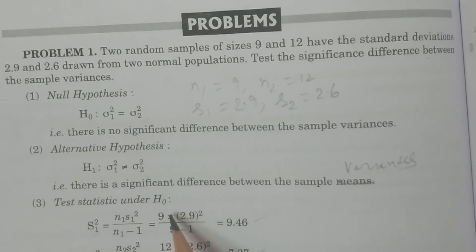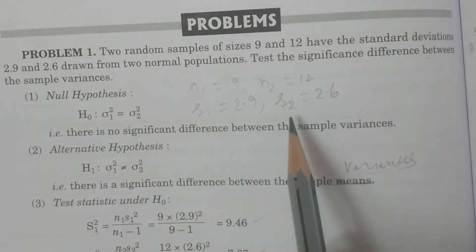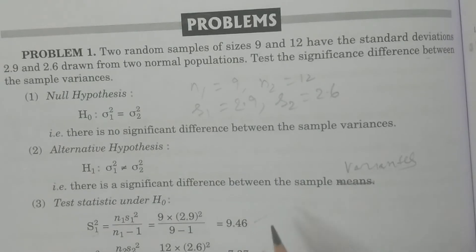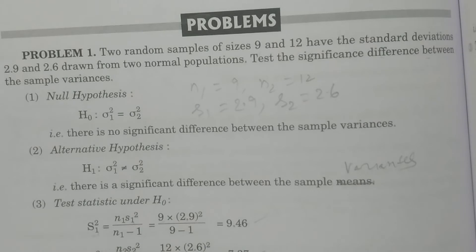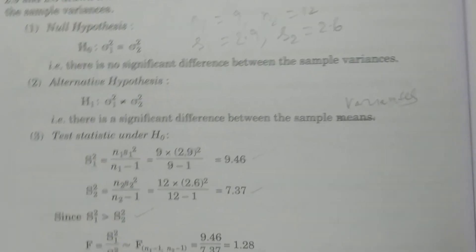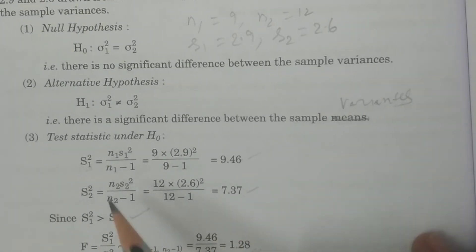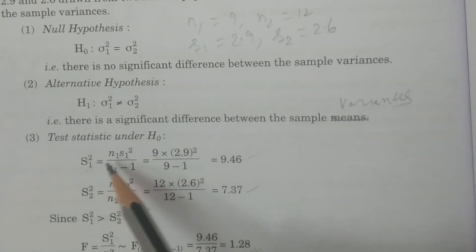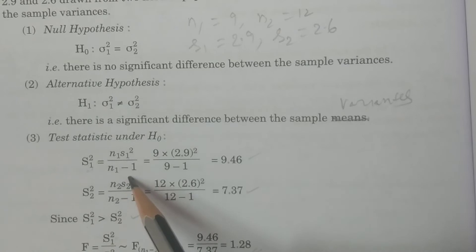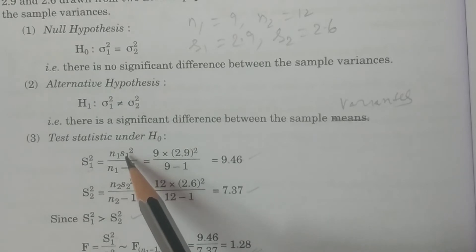Test statistic under H0: given values N1, N2, S1, S2, we calculate the F statistic. Capital S1 squared is equal to N1 times S1 squared divided by N1 minus 1. S1 squared is the first sample variance.